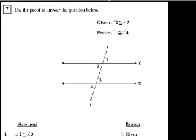All right, we're on problem number 7. When I copied and pasted, I made it a little bit smaller, so I'm going to read it for you just in case this is too small to read. It says, use the proof to answer the question below. They gave us that angle 2 is congruent to angle 3, so the measure of angle 2 is equal to the measure of angle 3.